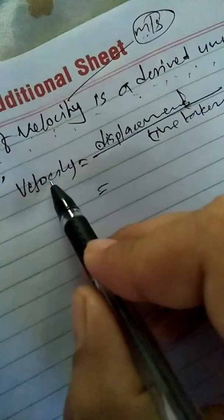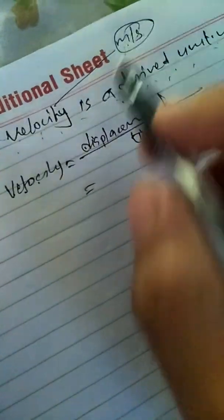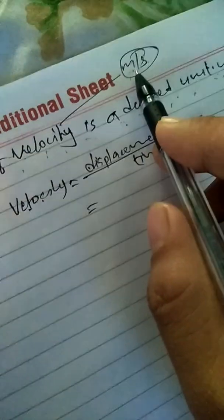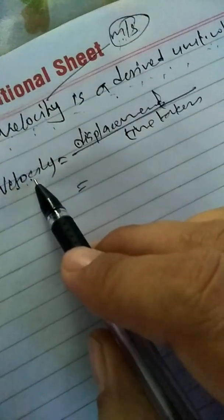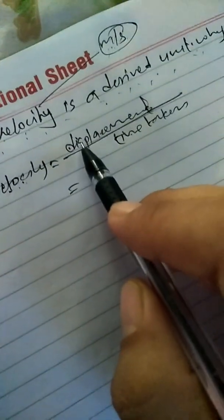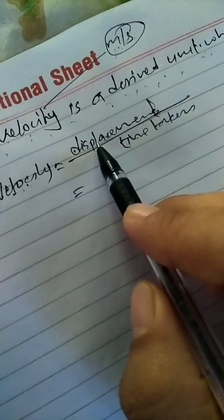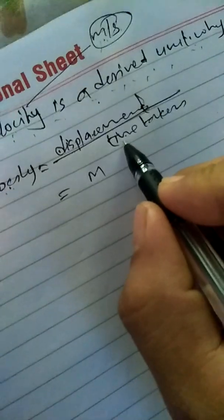The unit of velocity is meter per second. To find how meter per second comes, the formula for velocity is displacement by time taken. Displacement is the shortest distance, so what is the unit of distance? Distance has the unit of length. The unit of displacement is meter.